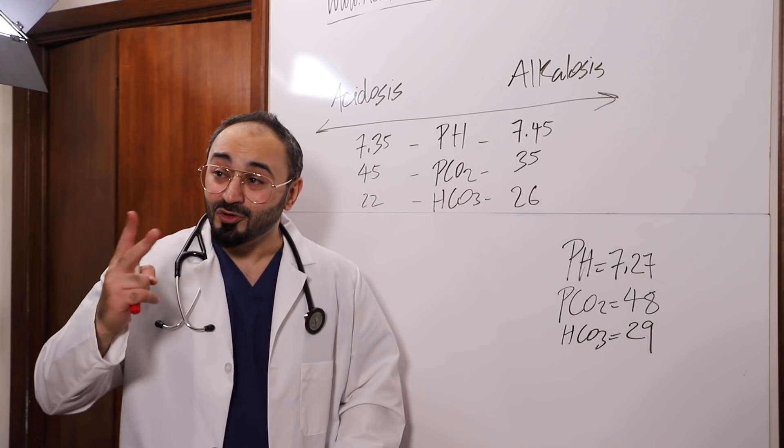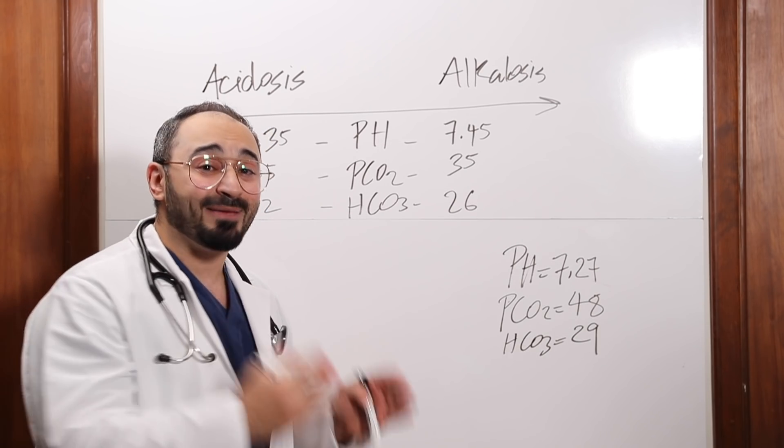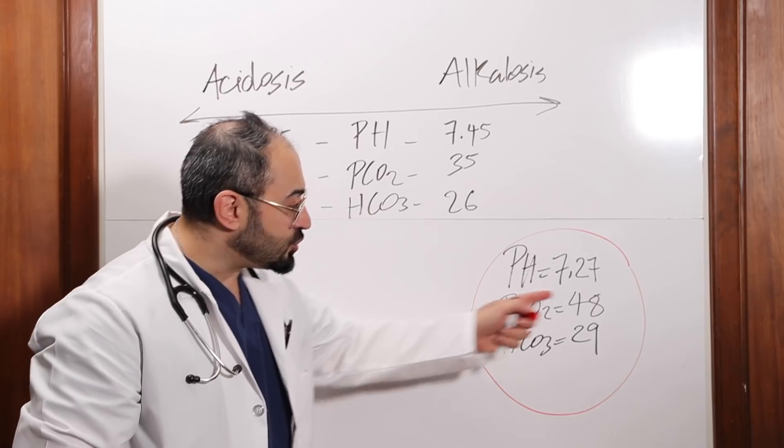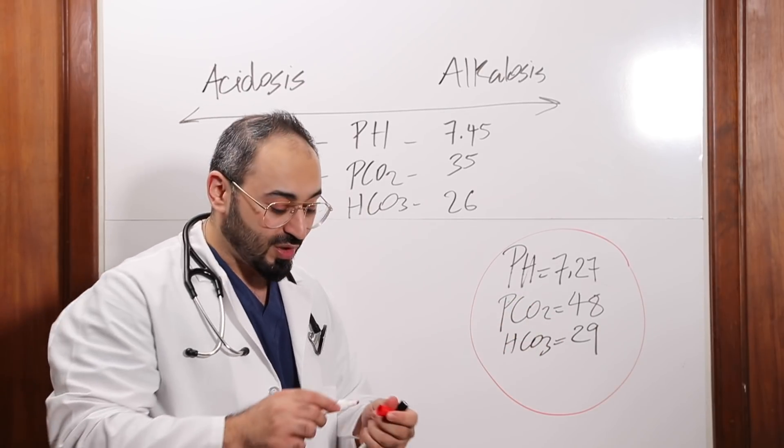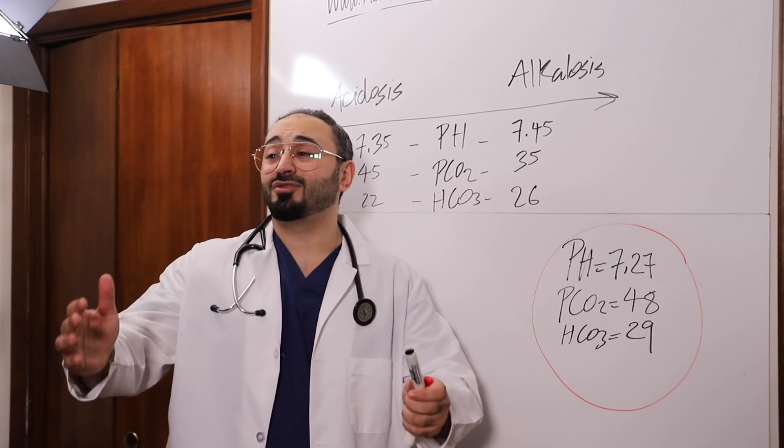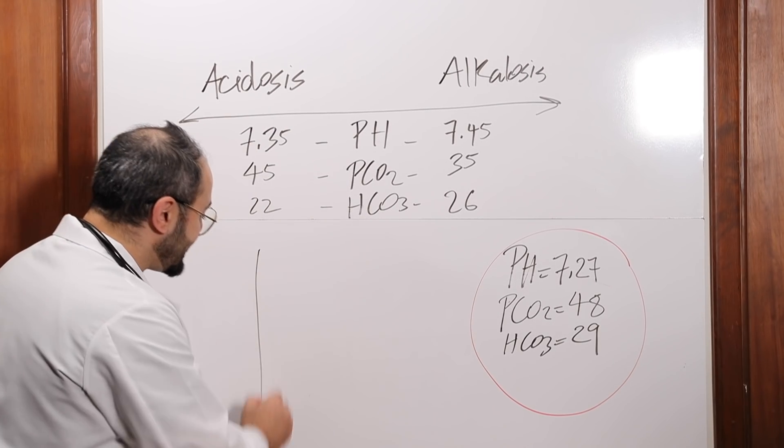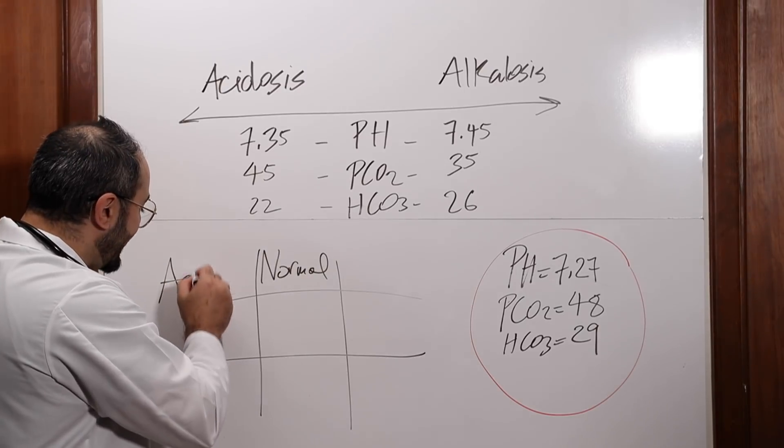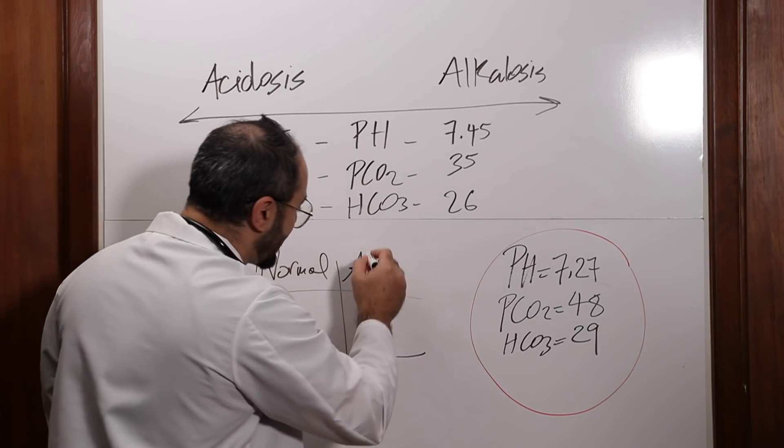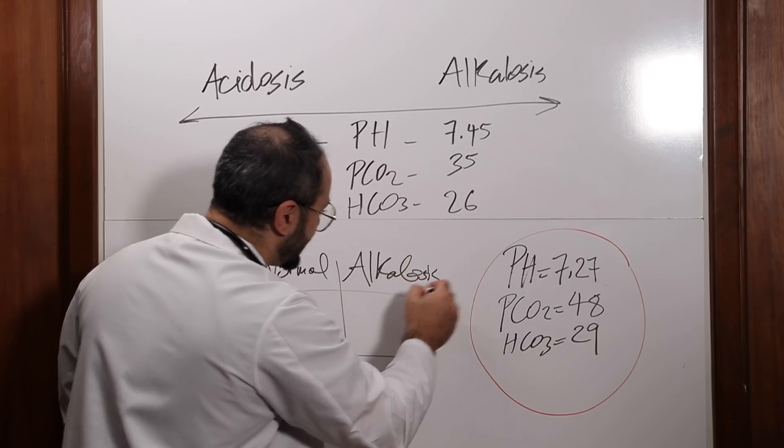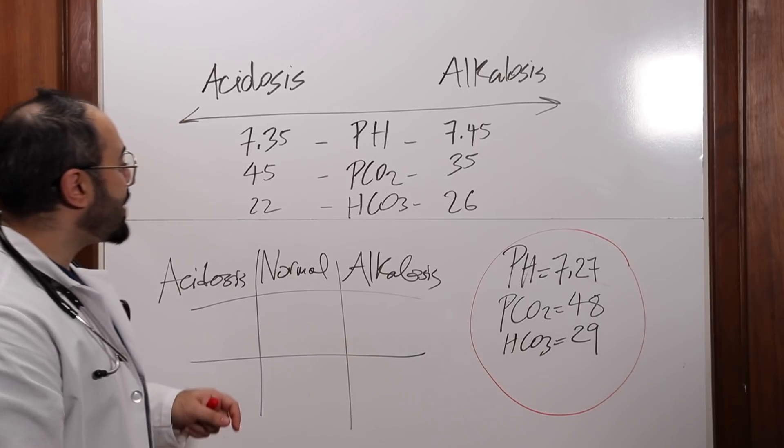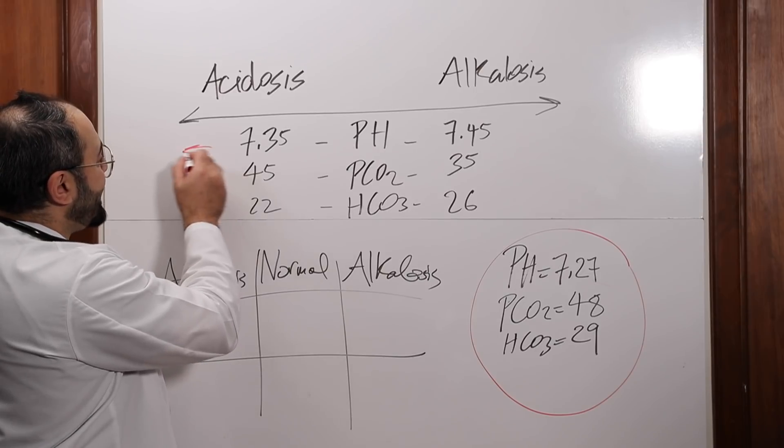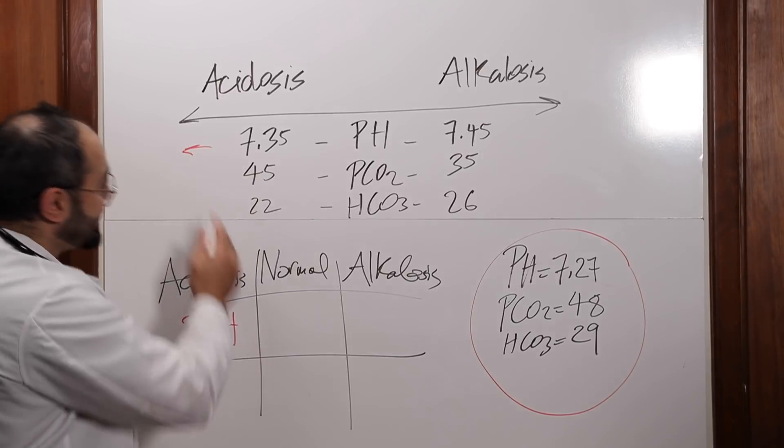So I put an example here on the screen. With two examples, I'm gonna explain everything you need to know about ABG's interpretation. First off, we're gonna start with this example. So the pH is 7.23, the PCO2 is 48, HCO3 or the bicarb is 29. So basically, the rule that we're gonna use is tic-tac-toe. A lot of you guys have played tic-tac-toe when you are young. So it's this grid. In the middle, we're gonna put normal, acidosis right here, and alkalosis on the other side. So we've got that example right there, pH is 7.27. So it's less than, so it's gonna be right here. It's acidotic. So I'm gonna put pH right here, because it's acidotic.